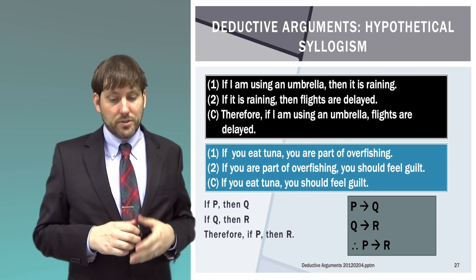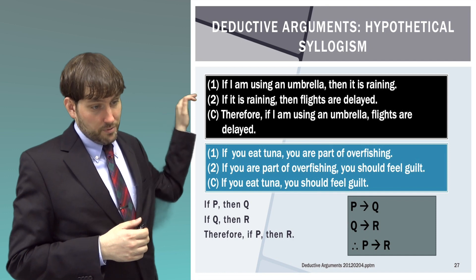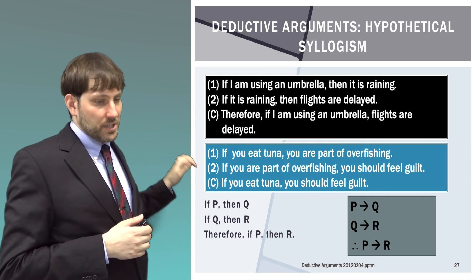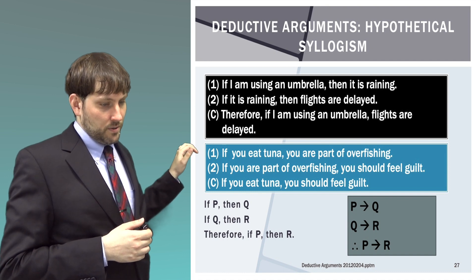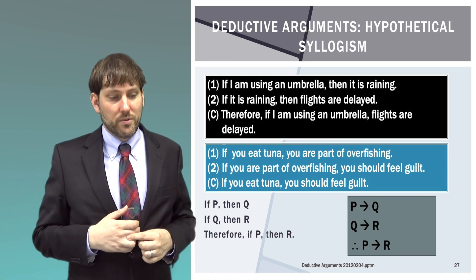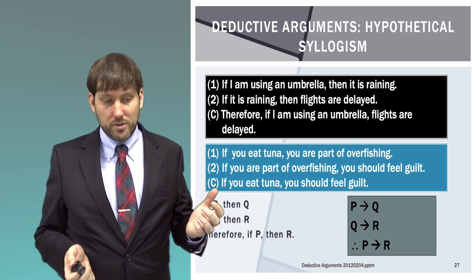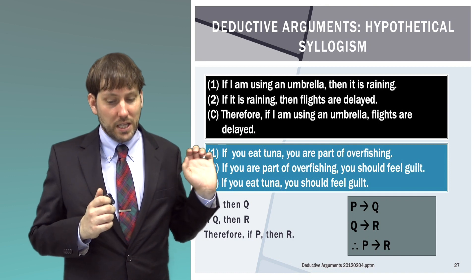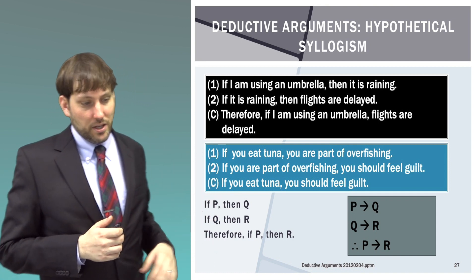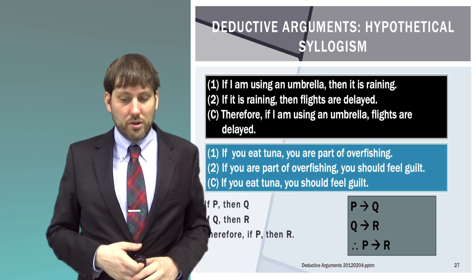Hypothetical syllogism has this pattern: 'If I'm using an umbrella, it is raining. If it is raining, then the flights are delayed. Therefore, if I'm using an umbrella, flights are delayed.' Another example: 'If you eat tuna, you are a part of overfishing. If you are a part of overfishing, you should feel guilt. Therefore, if you eat tuna, you should feel guilt.' The pattern is: if-P then-Q; if-Q then-R; therefore if-P then-R.